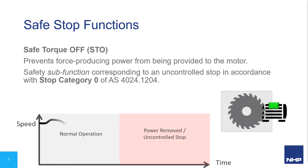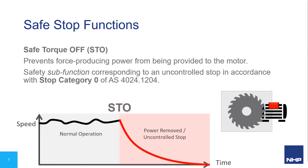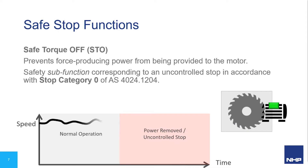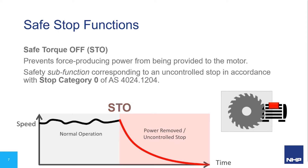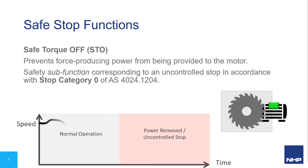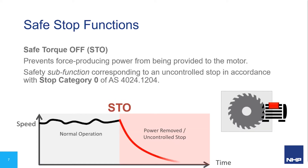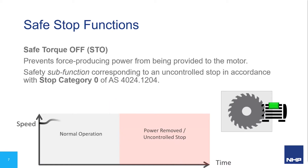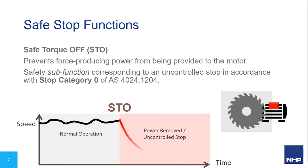As STO only removes torque, it doesn't remove voltage from the motor terminal, so it can't be used for isolation purposes alone. If triggered in the middle of operation, the motor will decelerate in an uncontrolled manner — which is why this function is generally used in conjunction with other safety functions, hence it is considered a safety sub-function. This type of uncontrolled stop is also called a Category 0 stop as defined in AS4024 part 1204. As torque power is completely removed, external forces may still act upon the load — for example, in hoisting applications a suspended load could fall dangerously — so additional measures like mechanical braking may be necessary.